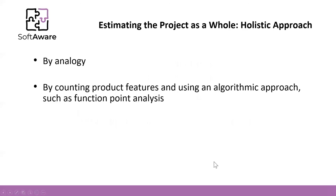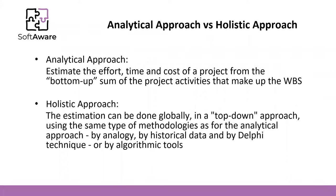So far we have been talking about the analytical approach. We estimate the effort, time and cost of a project from the bottom-up sum of the project activities that make up the WBS. We do a deep dive in the WBS, analyze each part, get the estimation of the effort, then the duration, then the cost. From the duration we build the network activities, define the critical path, and get the duration of the project. From the effort we analyze the cost of each activity, sum the cost of all activities plus the secondary costs, and then we get the cost of the project.